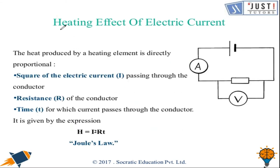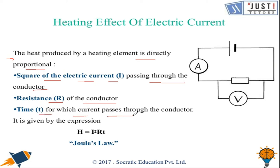The heat produced by a heating element is directly proportional to the square of the electric current I passing through the conductor, the resistance R of the conductor, and time T for which current passes through the conductor. It is given by the expression H = I²RT. The SI unit is joule, and this is also known as Joule's Law.